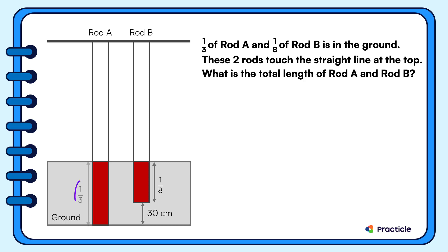So let's see what part of each rod is above the ground. Since we know that one third of rod A is in the ground, this means that two thirds of rod A must be above it. And we can find the fraction of rod B that is above the ground using the same logic. If one eighth of it is in the ground, seven eighths of it must be above the ground.